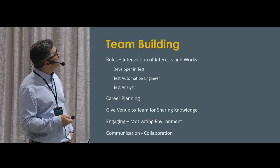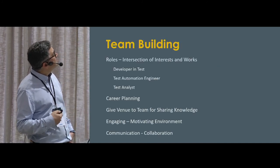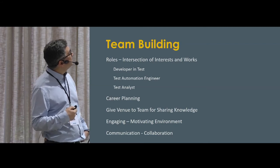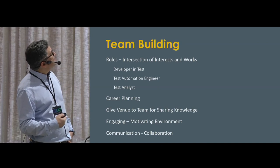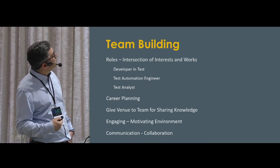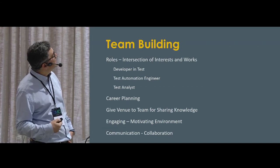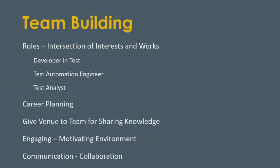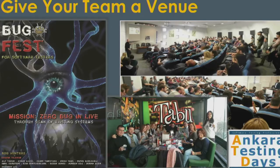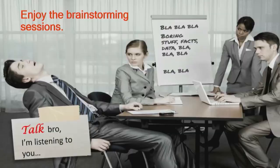Team building is also very important. These are the roles we use: test analyst for exploratory tests, test automation engineer who performs both manual tests and test automations, and the developer who writes tools and infrastructure. It's important to engage the team — here are our mini conferences and activities. It's important to continue brainstorming with your team, whether you are a junior test engineer or a very senior test lead.